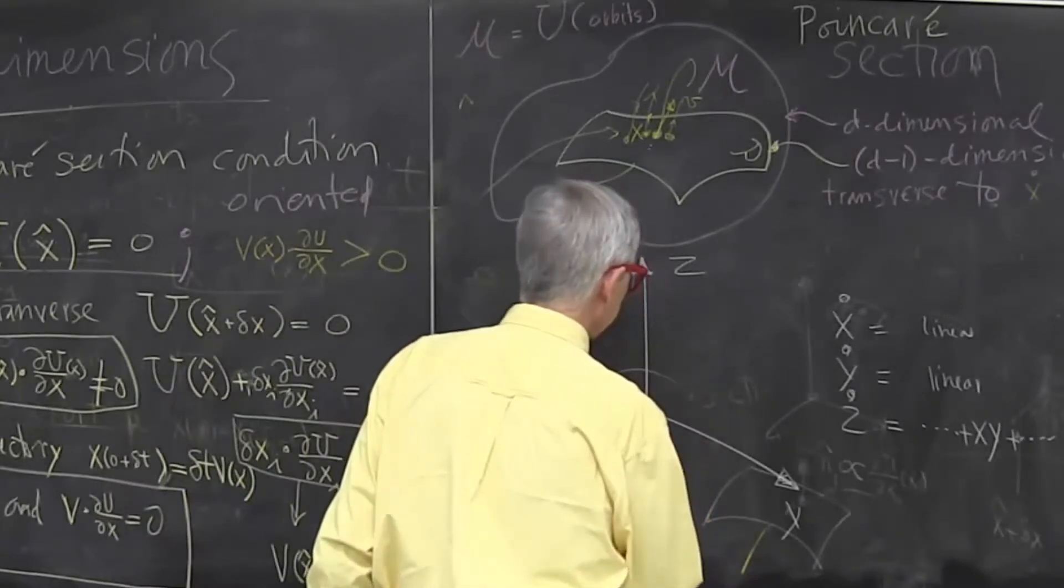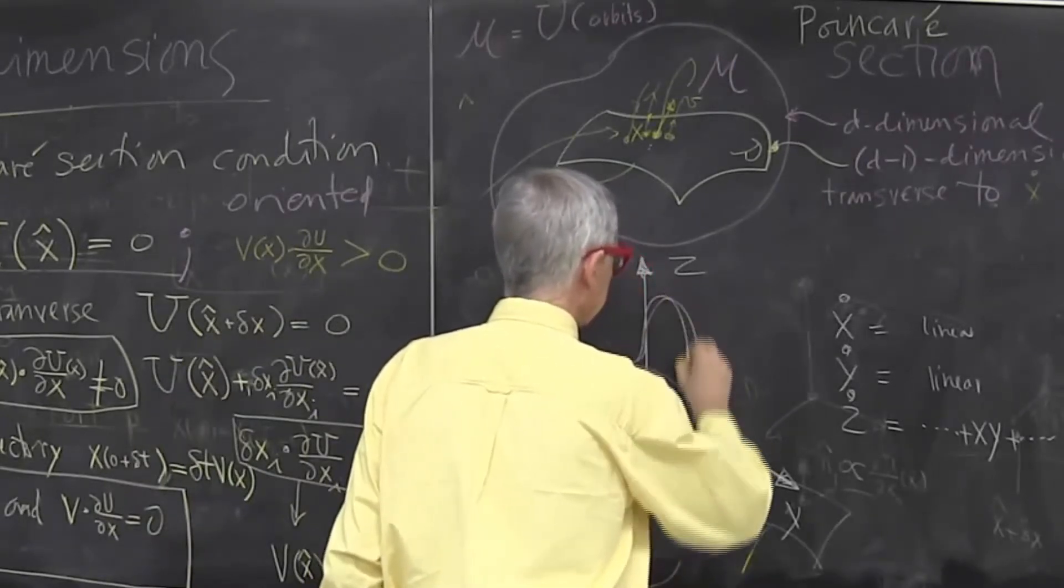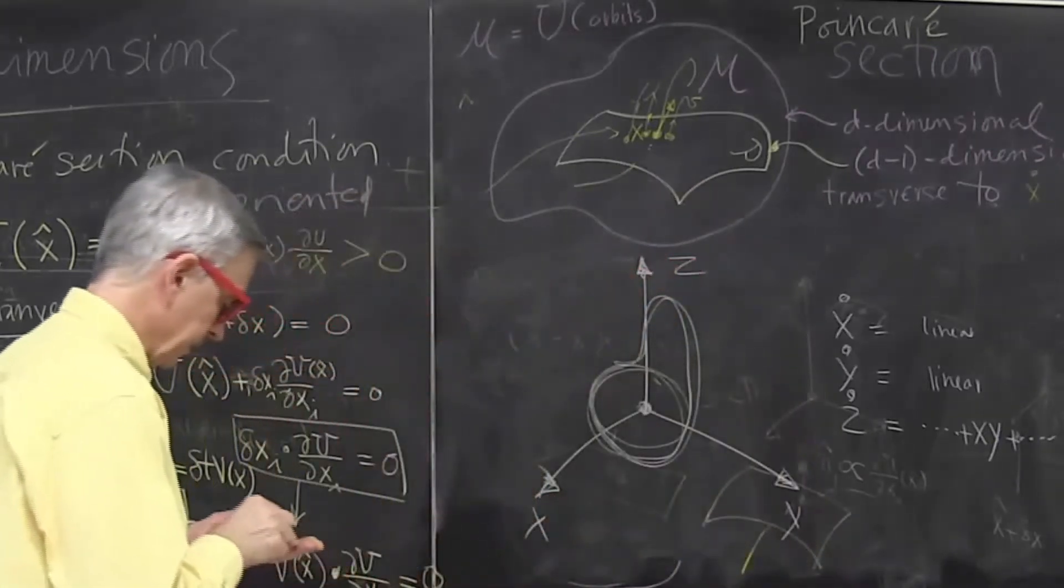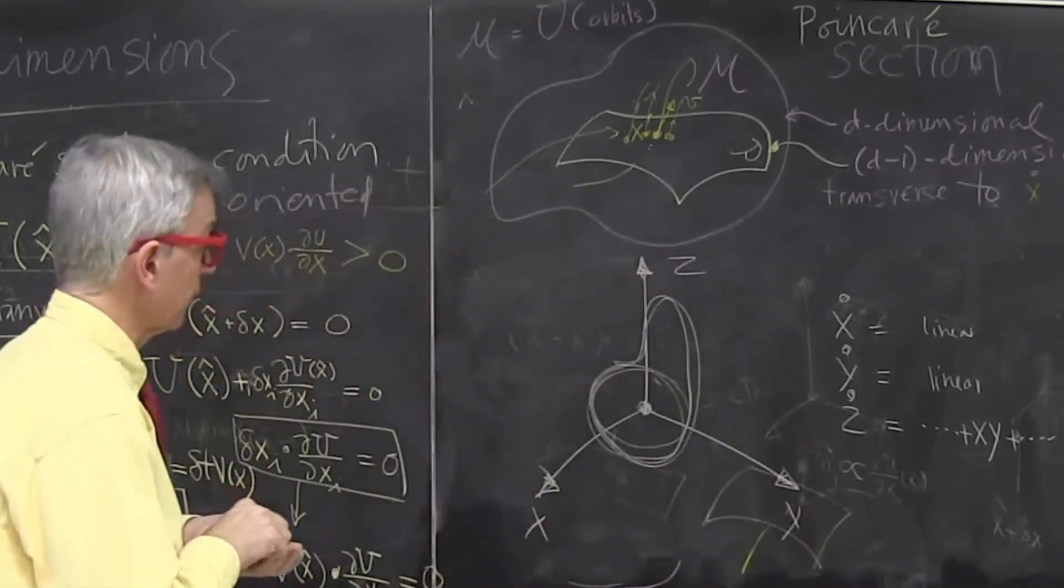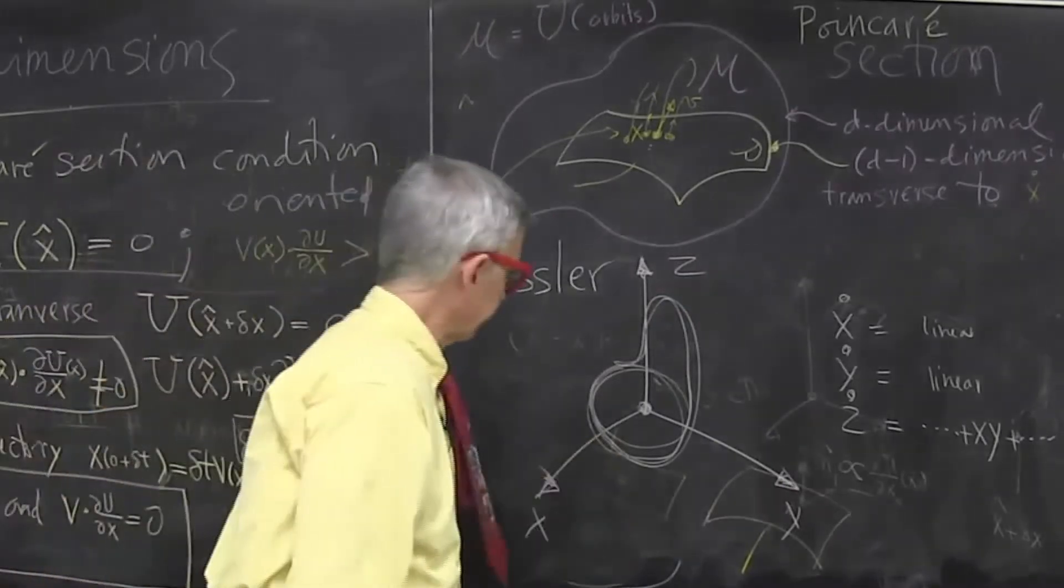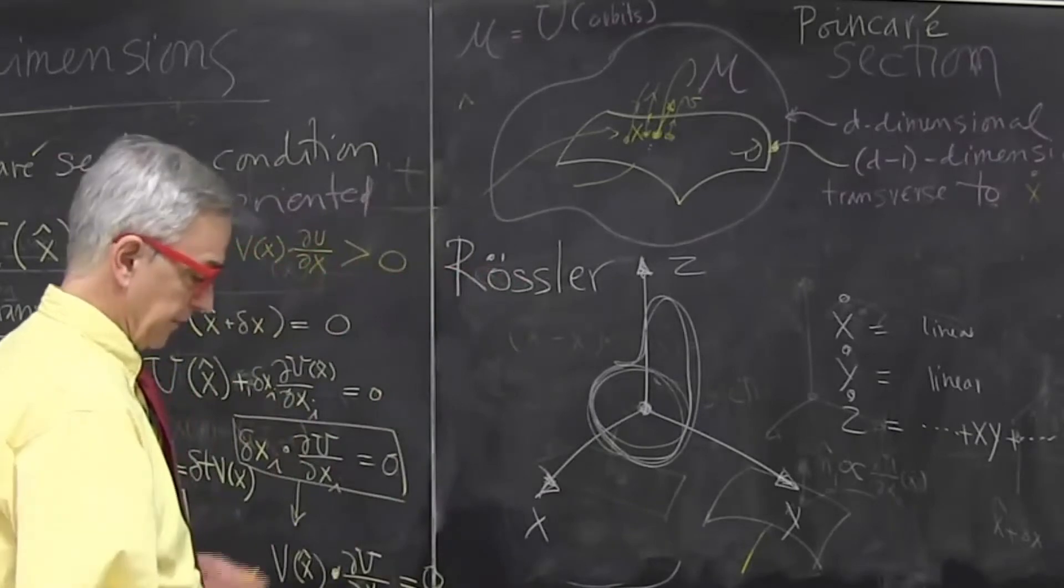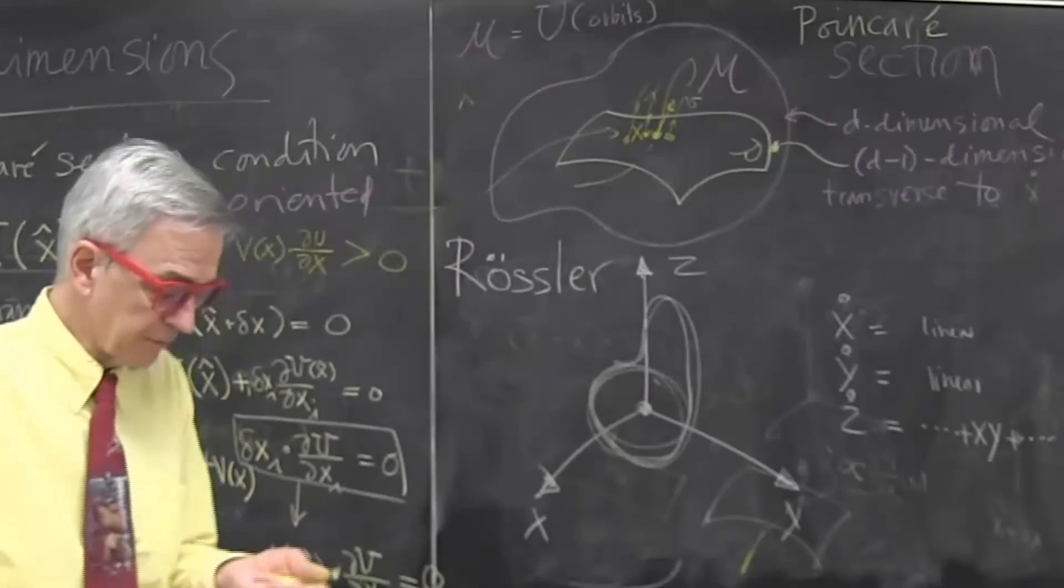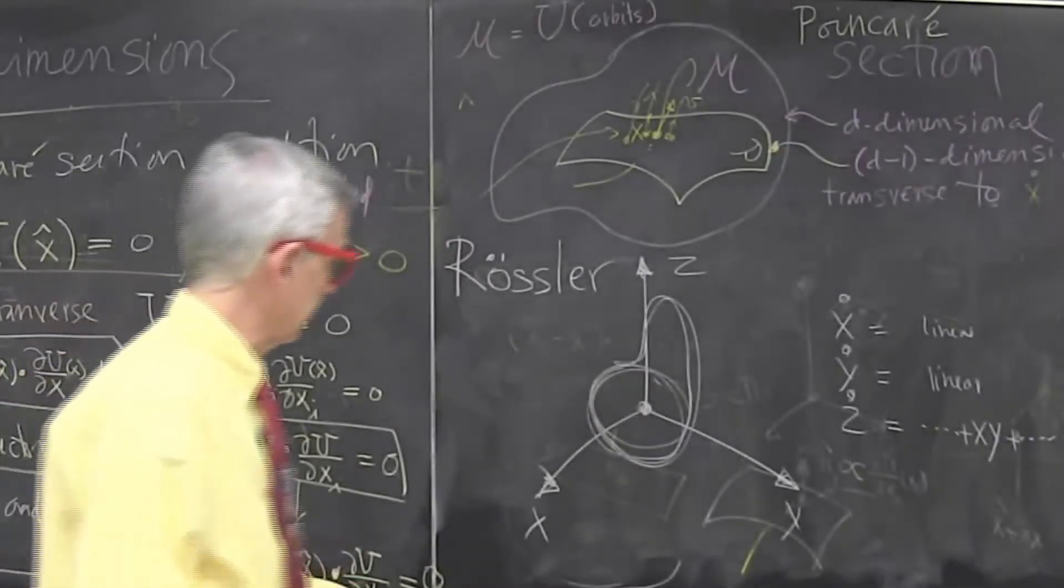When you do studies of it, you will discover that for parameter values, a particular system that Rössler chose, no matter where you start, sort of close to the origin at least, the equations settle down after a while and then trace out some complicated structure which is called a strange attractor. It will study at great length.